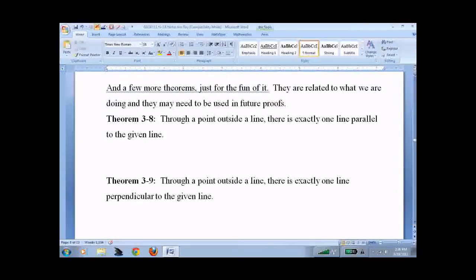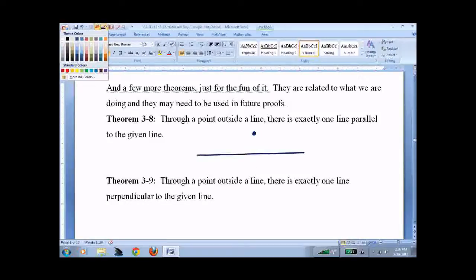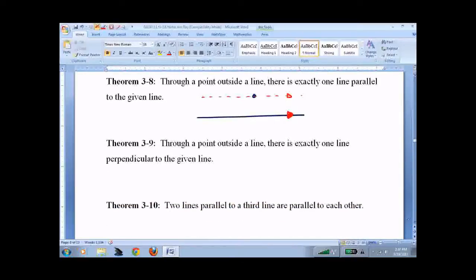Now there's a few more theorems. They're related to what we're doing and they might be used in future proofs. There's a theorem and the proof is kind of goofy. There's a point. It's outside of a line. There's only one line that's going to be parallel. Proof's goofy. Don't worry about it. Same thing. Except. Line. Point. There's only one line that is perpendicular.